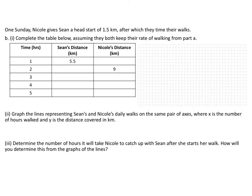In the same scenario, one Sunday, Nicole gives Sean a 1.5 kilometer head start, after which they start their time. So he goes 1.5 kilometers, and then they start their time when she starts walking. Given that situation, and assuming they're keeping their same rate of walking from Part A, so Sean's 4 kilometers per hour and Nicole's 9 kilometers every 2 hours, complete the table for their distances over the given hours, graph the lines that represent Sean and Nicole's daily walks, and then determine the number of hours it will take for Nicole to catch up with Sean after she starts her walk. She's starting behind him, so how long will it take until she passes him? Go ahead and pause the video and do Part B.